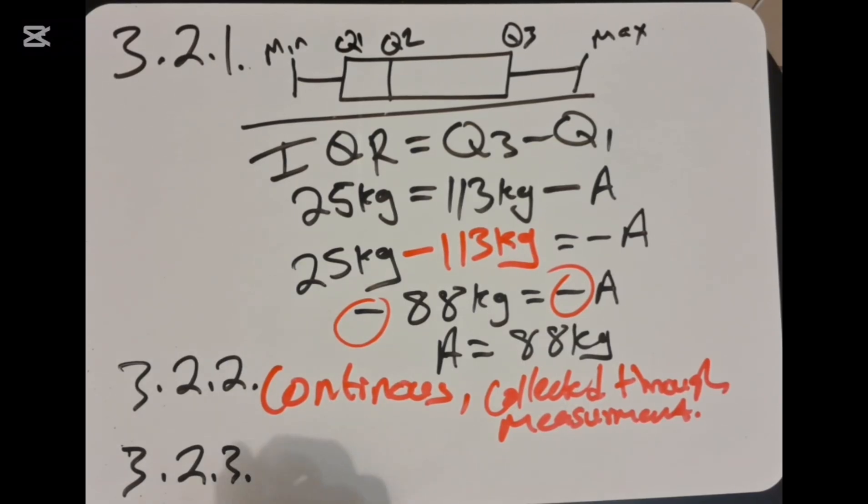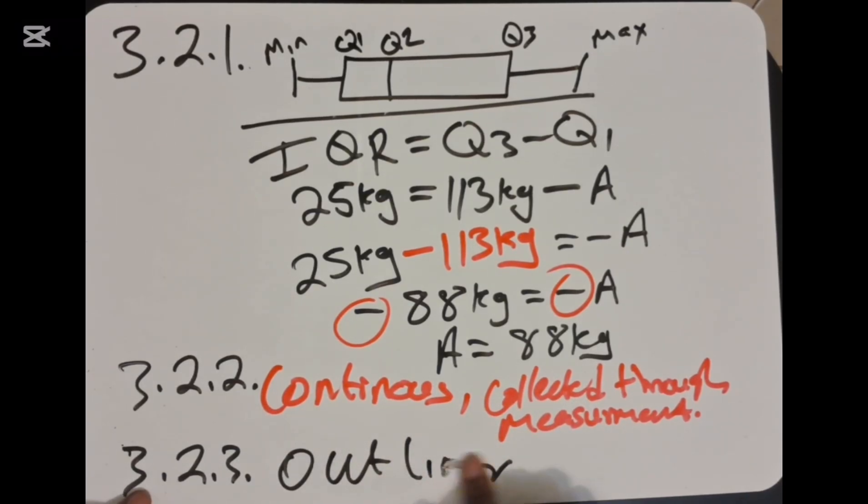Outlier—my mistake in English, it's outlier. So the data that is very much far apart from other values, we call it the outlier.